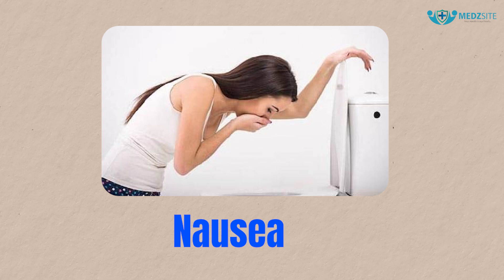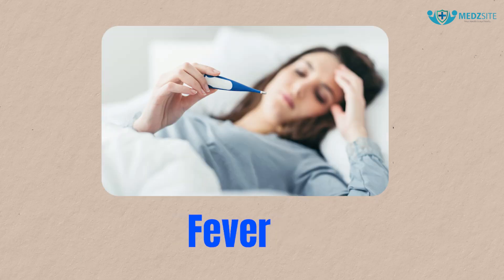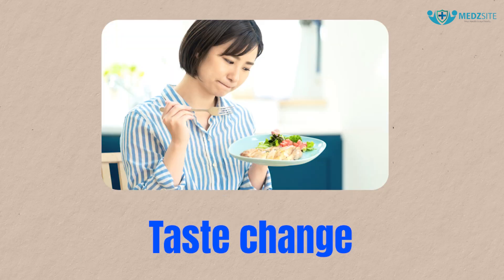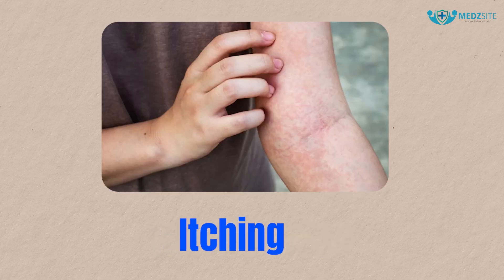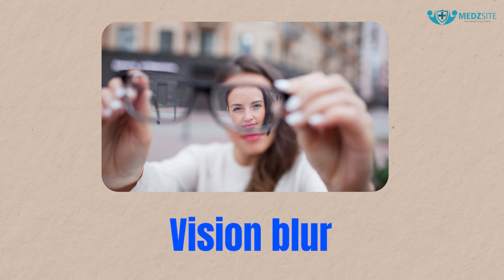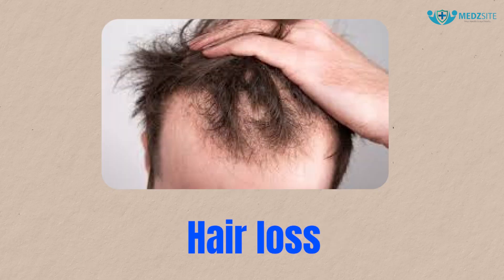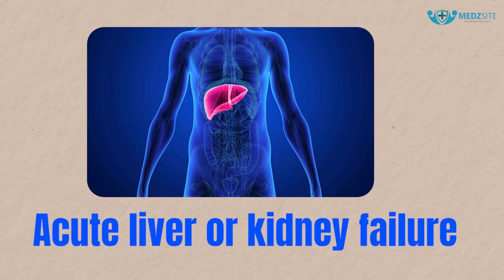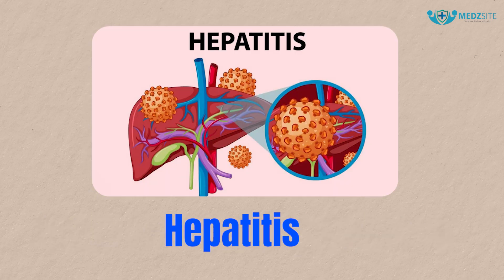What are the side effects? The side effects include indigestion, abdominal pain, loss of appetite, constipation, vomiting, nausea, headache, fever, fainting, dizziness, diarrhea, taste change, itching, confusion, vision blur, dark urine, hair loss, seizures, hives, acute liver or kidney failure, bone marrow suppression, and hepatitis. These are some of the side effects that this medicine could bring.